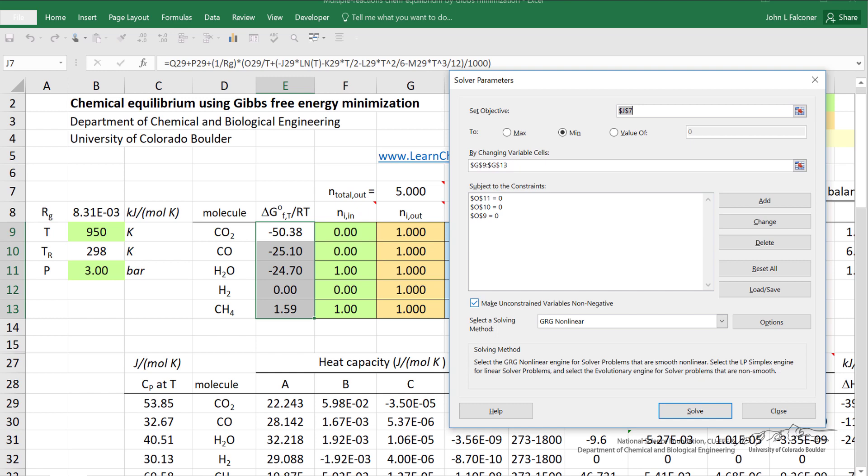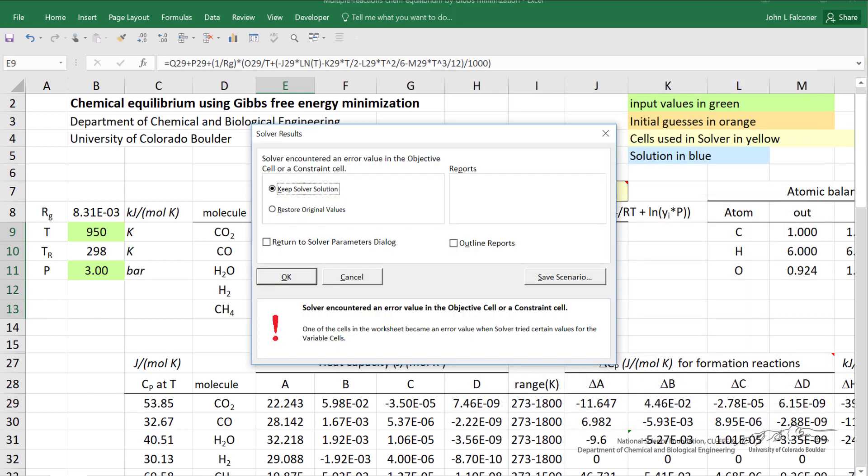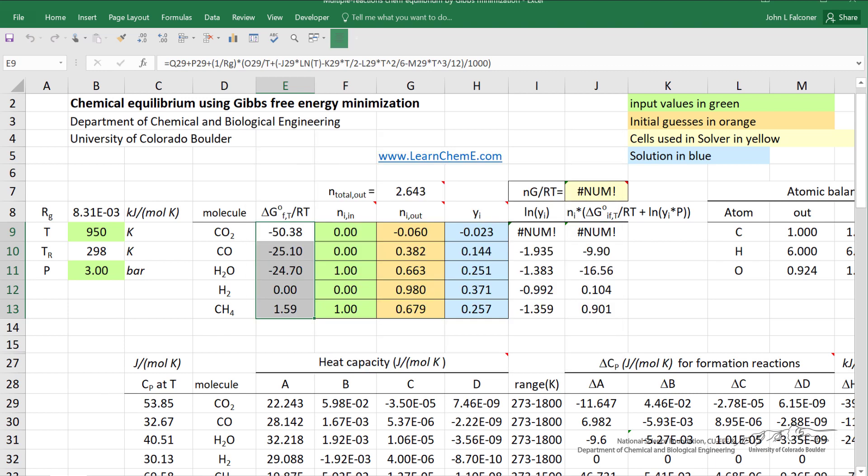In other words, I want a solution where the number of moles is positive. That's only physically meaningful. So if I hit Solve, you'll notice it says it encountered an error. Let's look at what happens. It gives a negative value, and that's an error because we said they're positive. So this can happen depending on what our initial conditions are.